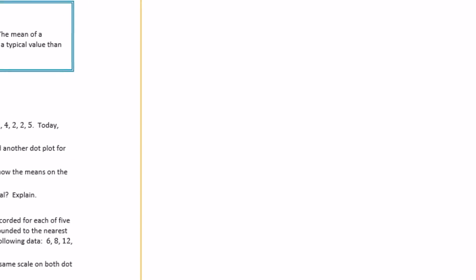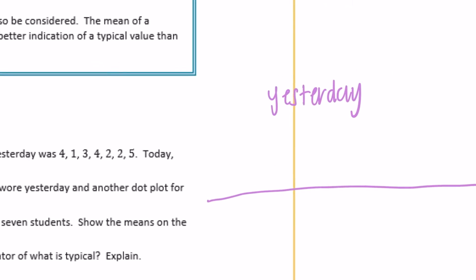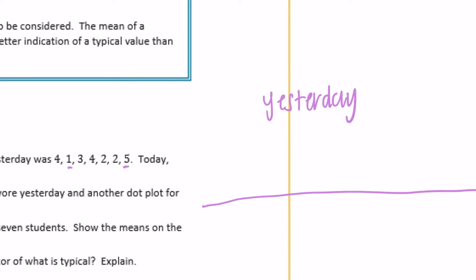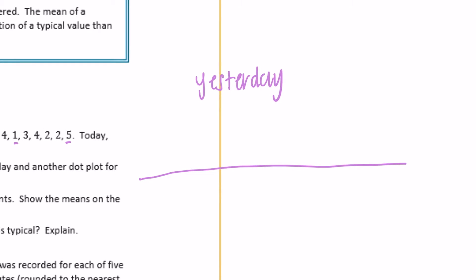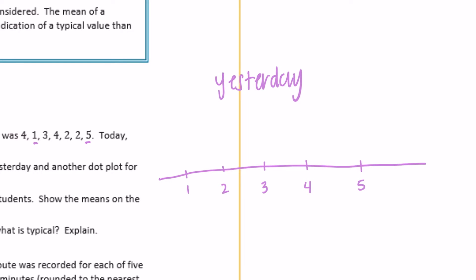Let's start with yesterday. Draw a dot plot that ranges from one to five — the lowest being one, the highest being five. There aren't any halves or fourths so just go from one to five. Plot all the data: one 1, two 2s, one 3, two 4s, and a 5.